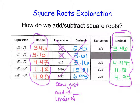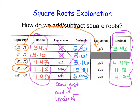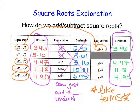However, looking more closely, I notice that square roots work like variables. So if this said x plus x, I would write two x. Here, the square root of three plus the square root of three gives two square roots of three. Similarly, three square roots of five plus two square roots of five gives five square roots of five — just like combining like terms. And four square roots of six minus two square roots of six gives two square roots of six. We can only combine like square roots and simply state how many we have.